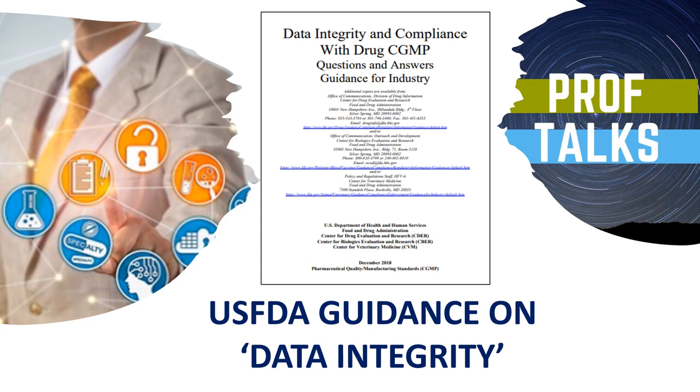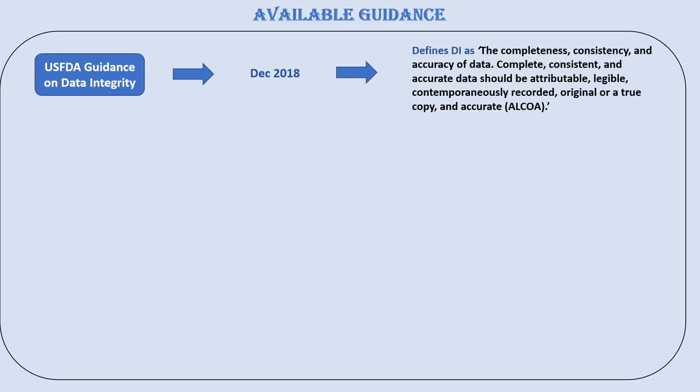Hello everyone. Today we'll discuss the most talked-about topic in the pharma industry: data integrity. We'll see the USFDA requirements defined in the USFDA guidance for data integrity, released in December 2018. It defines data integrity as completeness, consistency, and accuracy of data. Complete, consistent, and accurate data should be attributable, legible, contemporaneously recorded, original or a true copy, and accurate — generally defined as ALCOA. Another important guidance is the MHRA guidance, issued in March 2018.